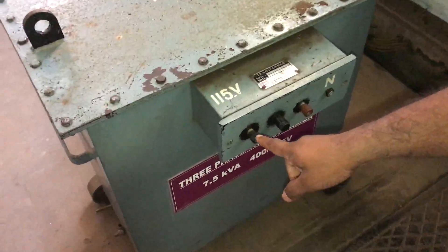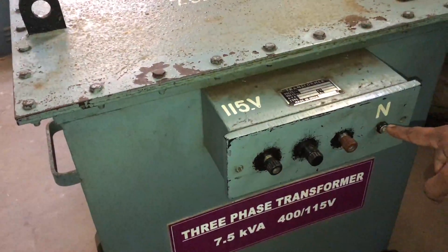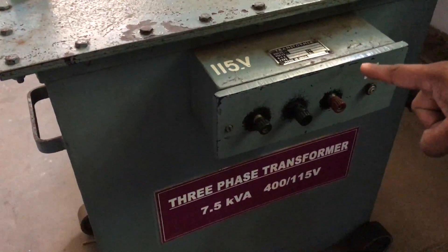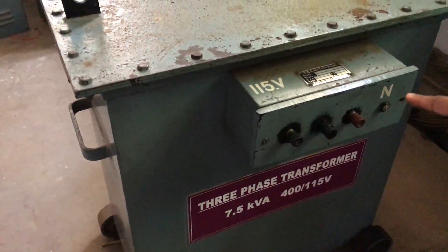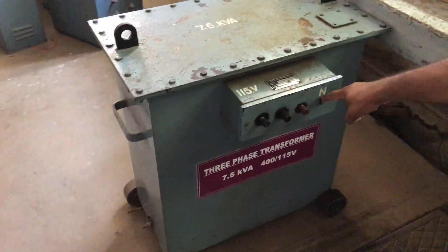This is a three-phase transformer which has four terminals: R, Y, B, and neutral point. It is connected with 120 degree displacement for each coil. The neutral is tapped from the center point of the star point.